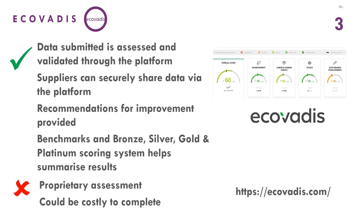Ecovardis is a proprietary assessment method to assess implementation of environmental social governance within an organization. Suppliers can securely share data via the platform, and recommendations for improvement are provided in the final report. There are benchmarks to compare your organization against others, and an overall bronze, silver, gold, or platinum scoring system that helps summarize the results.